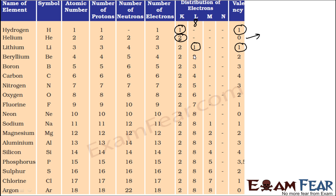Beryllium's outermost shell has 2 electrons; it needs 6 more or has to give 2. Nobody gives 6 electrons, so it loses 2 to attain stability — valency is 2. Boron's outermost shell has 3 electrons; 5 more are required to form an octet. Either give 3 or take 5 — giving 3 is easier — so valency is 3. Carbon has 4 valence electrons; it can give 4, take 4, or share 4 — anything is possible — so valency is 4.